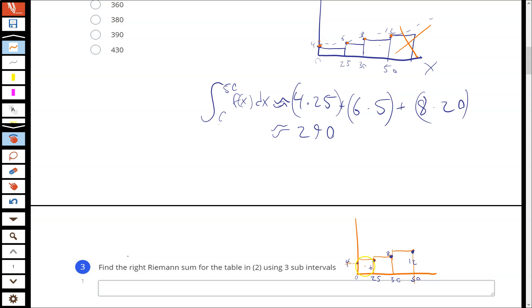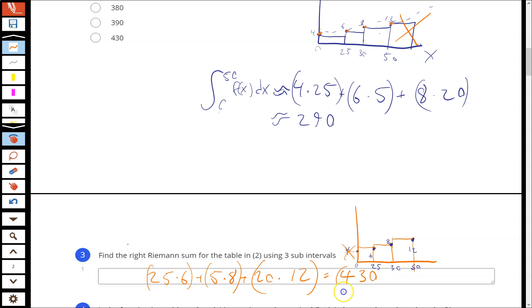We're going to do the same math as we did before. Base times height of the rectangle. First one is 25 times 6 now, plus 5 is the change in x times 8, plus 20 times 12. Double-check that you understand how I got that from each of the rectangles. Remember, the x values are your change in x. So 25 is the change in x, 5 is the change in x from 25 to 30, and 20 is the change in x from 30 to 50. Then you just do the math, and I get 430.